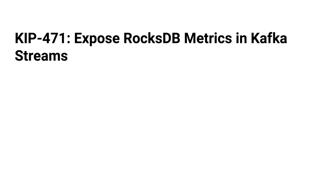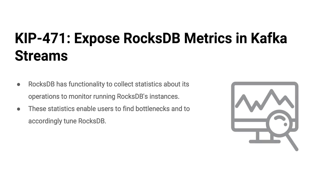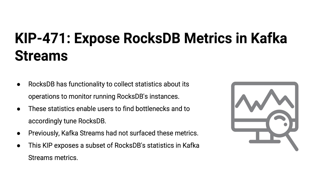Finally, KIP 471: Expose RocksDB Metrics in Kafka Streams. The default state store that Kafka Streams uses is RocksDB — it uses that as an internal key-value store and an on-disk serialization of any state a streams process needs. RocksDB exposes all its own metrics; it's a little log-structured storage tree, really interesting on its own. You might want to know what's going on with it at any given moment. Historically, to get at those metrics you either had to use JNI or get it to dump them out to a file and read the file — and nobody wants that. Now Kafka Streams is willing to report all of the RocksDB metrics without any workarounds.